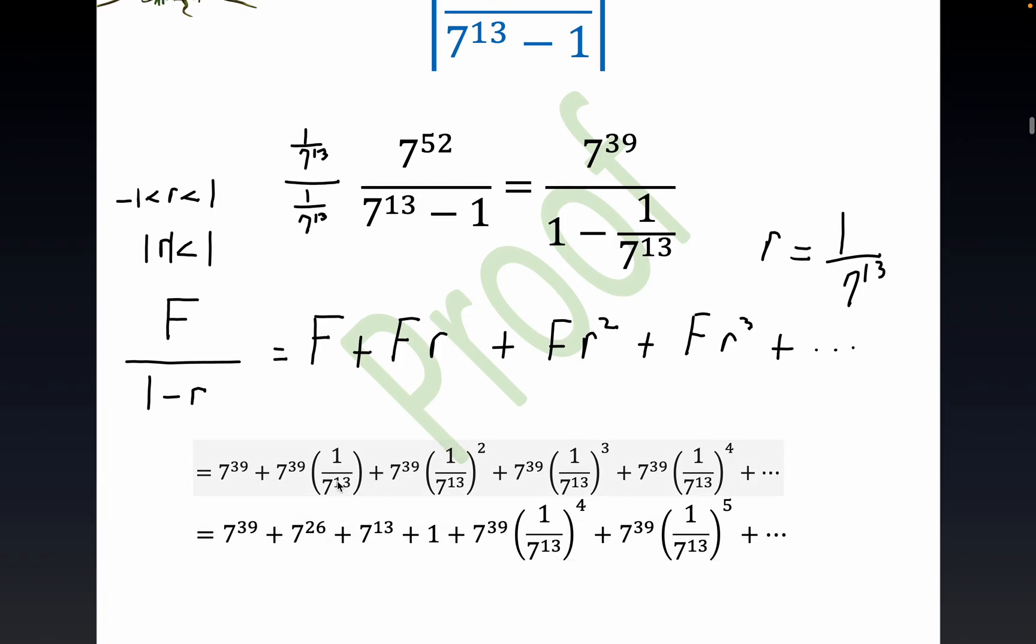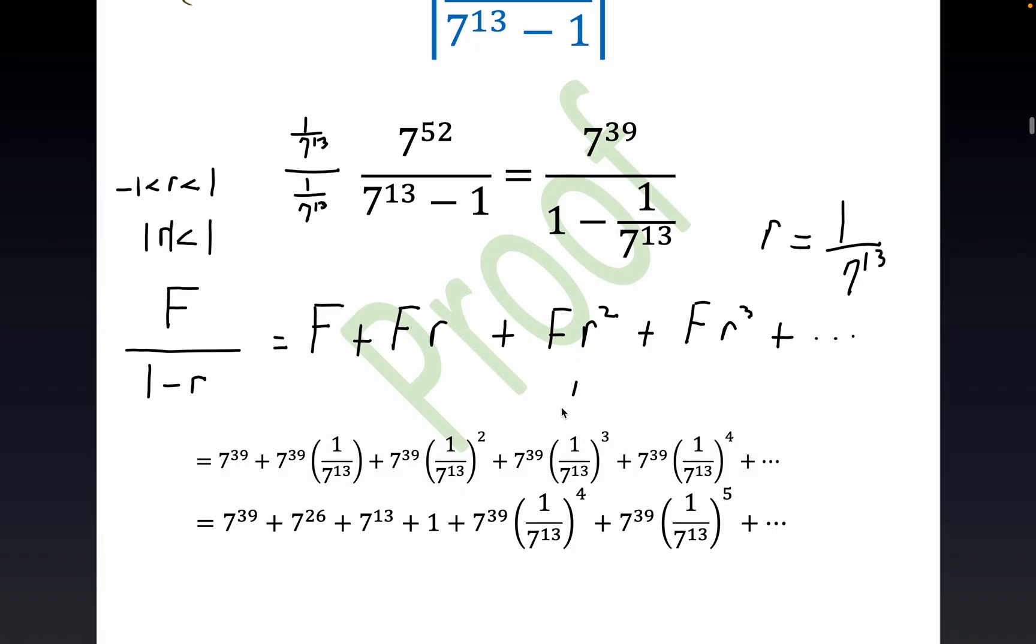Now notice that laws of exponents yield these first three, four integer terms. Notice that this would just be what? This is one, when you cube this, this would be one over seven to the thirty-ninth power. But that's exactly where this one that you see right here comes from.